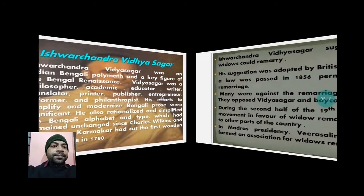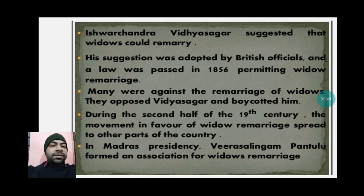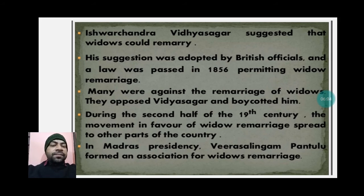Vidyasagar suggested that widows could remarry. His suggestion was adopted by British officials and a law was passed in 1856 permitting widow remarriage. These years are important to remember: 1829 for the banning of the Sati system, and 1856 for the permission of widow remarriage, both achieved through the efforts of these reformers.